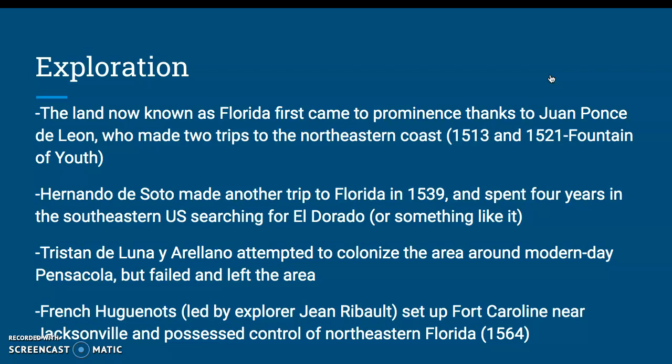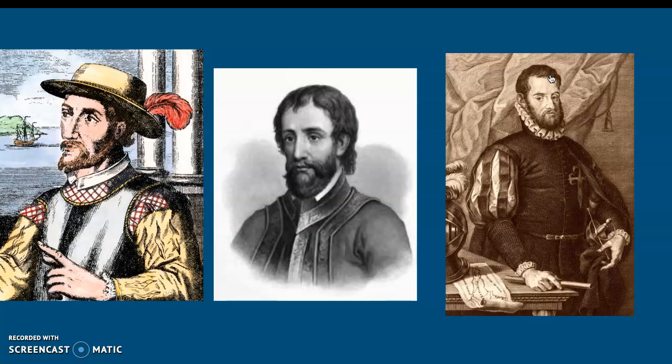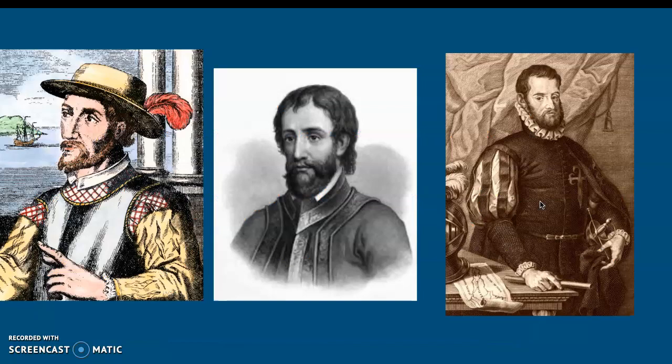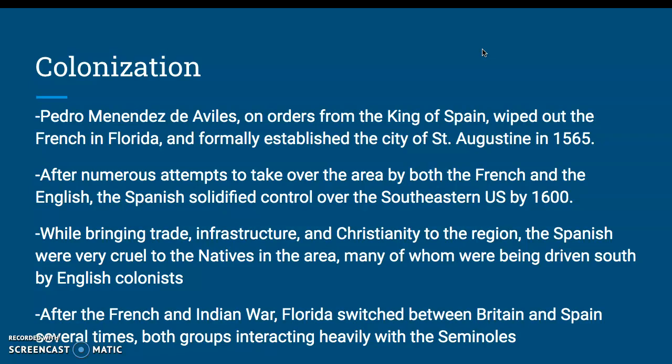That is actually the remnants of the first and earliest modern city — however, they're not going to be there very long. Pedro Menéndez de Avilés, on orders from the King of Spain, wiped out the French in Florida and formally established St. Augustine in 1565, making it the oldest still-inhabited city in the continental United States. After numerous attempts to take over the area by both the French and the English, the Spanish solidified control over the southeastern United States by 1600.